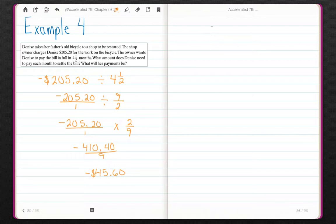The other way to do that would be to change negative 205.20 divided by 4.5. Turn the four and a half into a decimal instead. Negative 205.20 divided by 4.5. Move the decimal one place to the right so that you have a whole number. Move the decimal one place to the right and move it up.